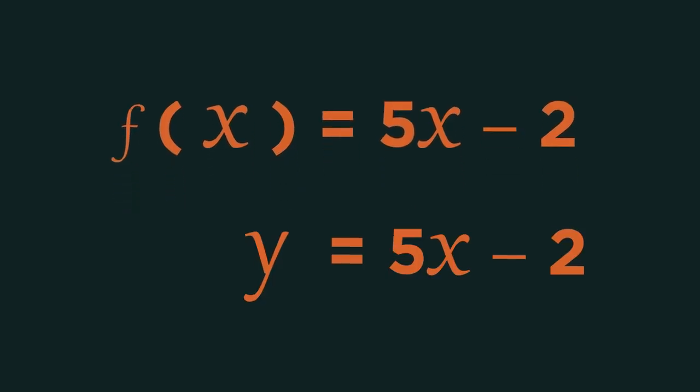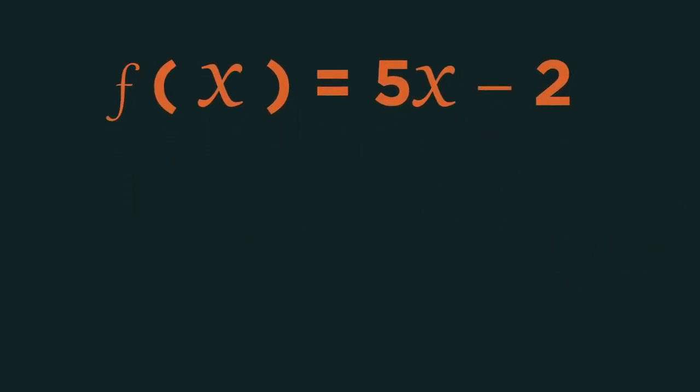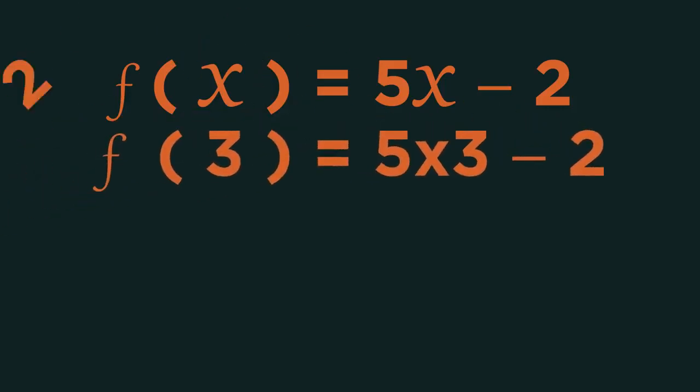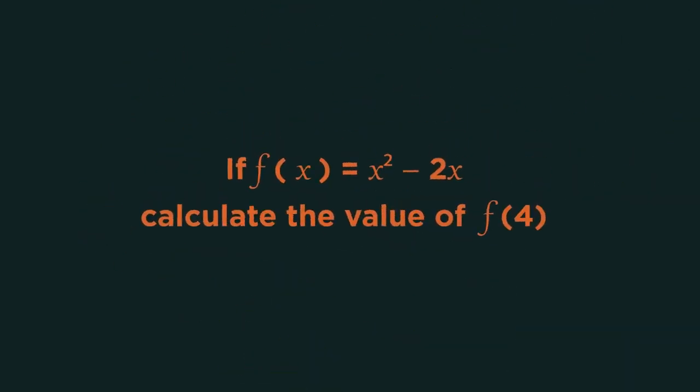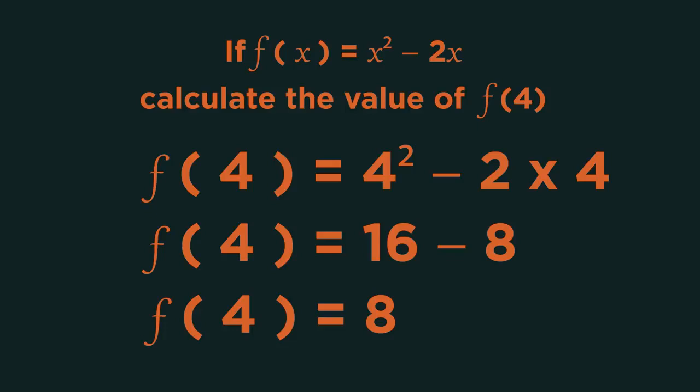If we wanted to calculate the value of f of 3, we just need to replace the x in the function with 3, which we already knew from our input-output machine earlier. So what's the value of f of 4 for this function? Did you get f of 4 equals 18?